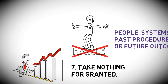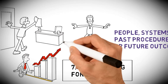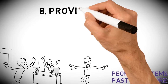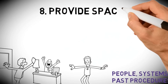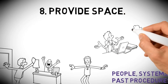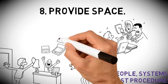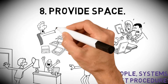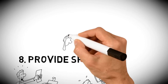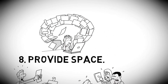Seven: take nothing for granted. Don't take people, systems, past procedures, or future outcomes as a given. Things change constantly and it is important to be ready to move with the changes. Eight: provide space. Everyone needs space at one time or another, and trust is about allowing that space. Don't hover over an employee giving constant directions.